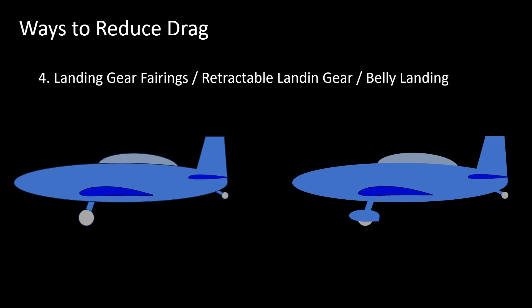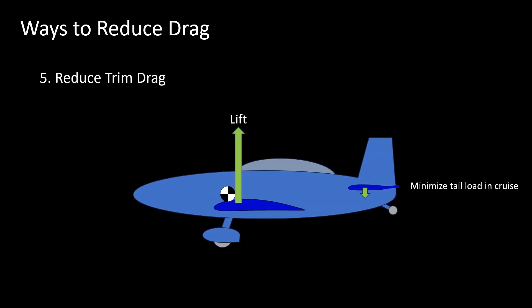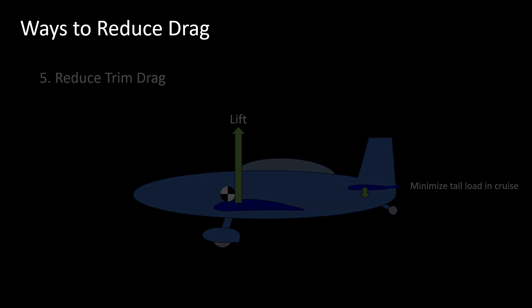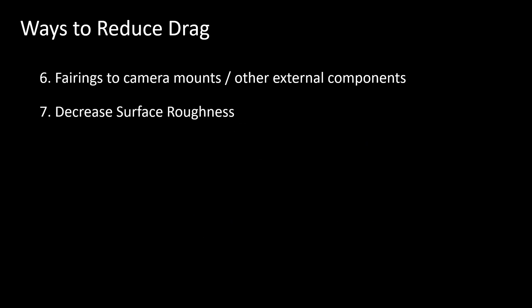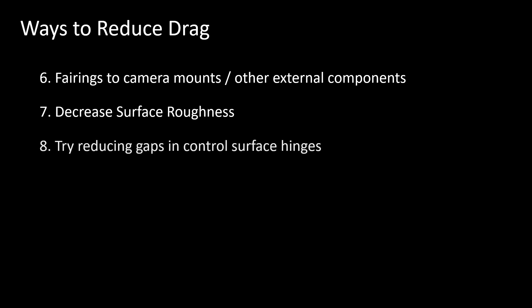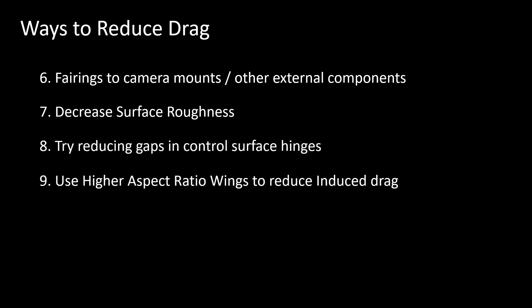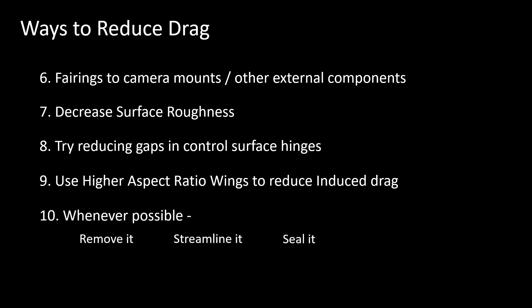Reduce trim drag by properly designing the horizontal tail and try to minimize the horizontal tail load during cruise. Add fairings to or streamline camera mounts and other components. If possible, decrease the surface roughness to reduce skin friction drag. Try reducing gaps in connected parts like control surfaces. And whenever possible: remove it, streamline it, seal it, and smooth it.